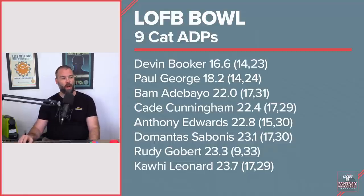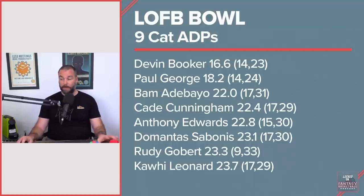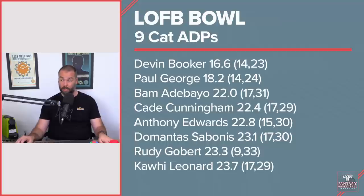Bam Adebayo had a pretty big range of outcomes. His ADP was 22, but he went up to 17 and as low as 31 — middle to back end of round 3.